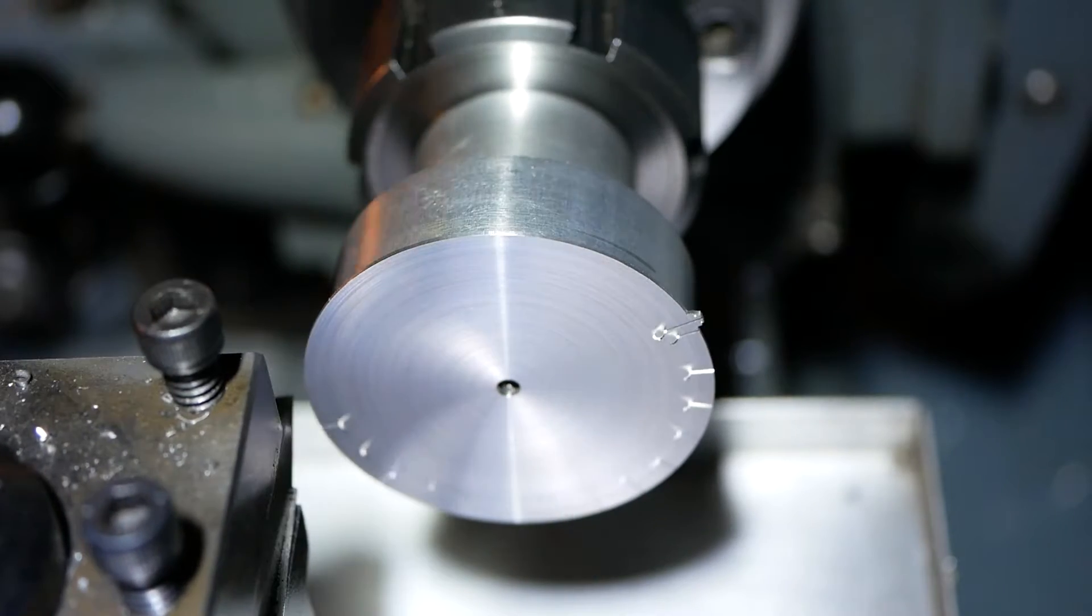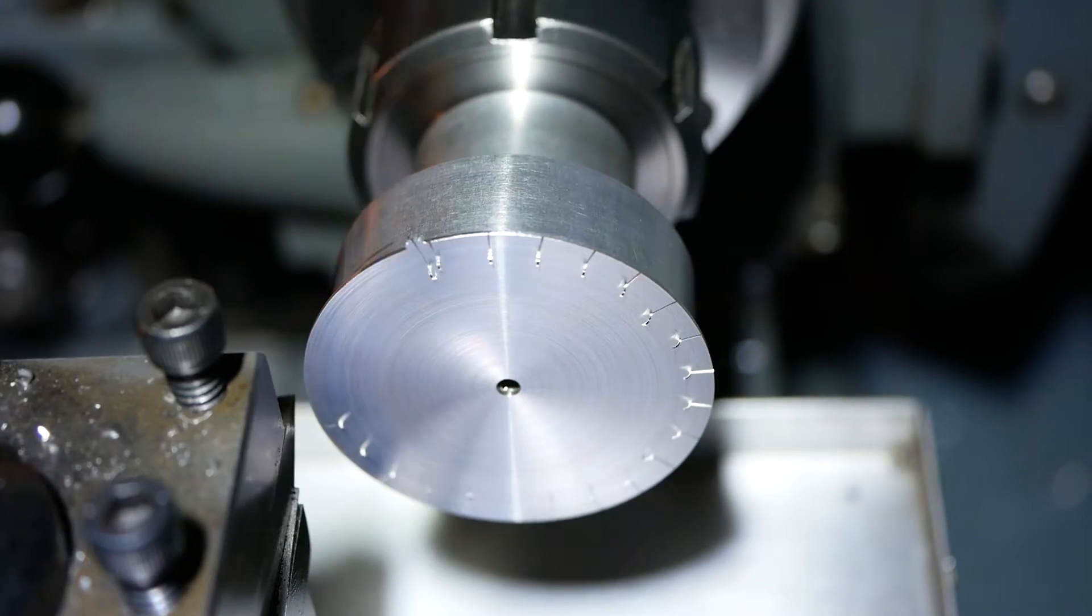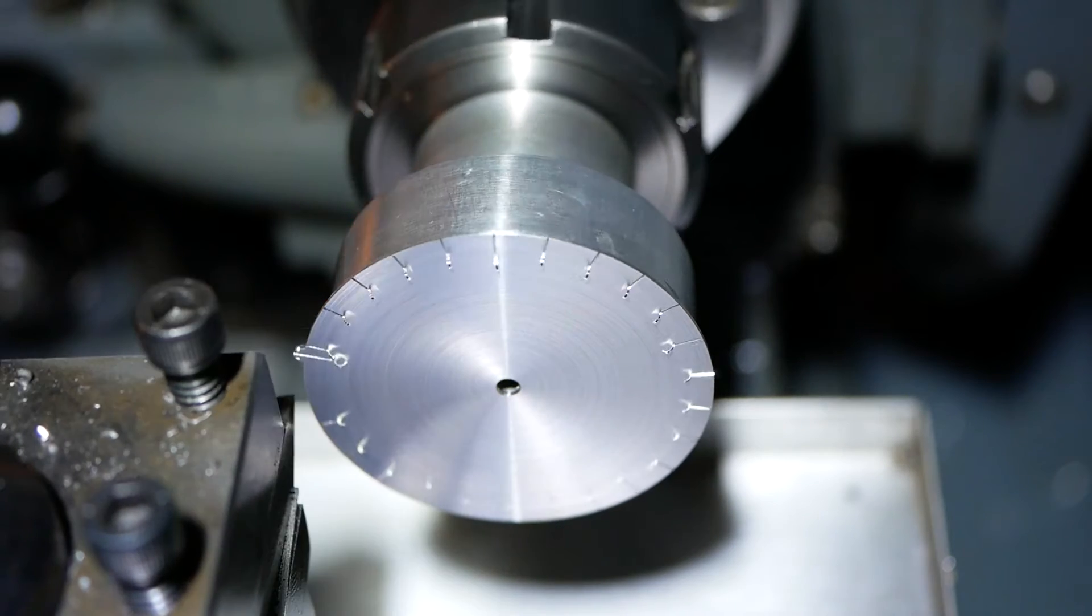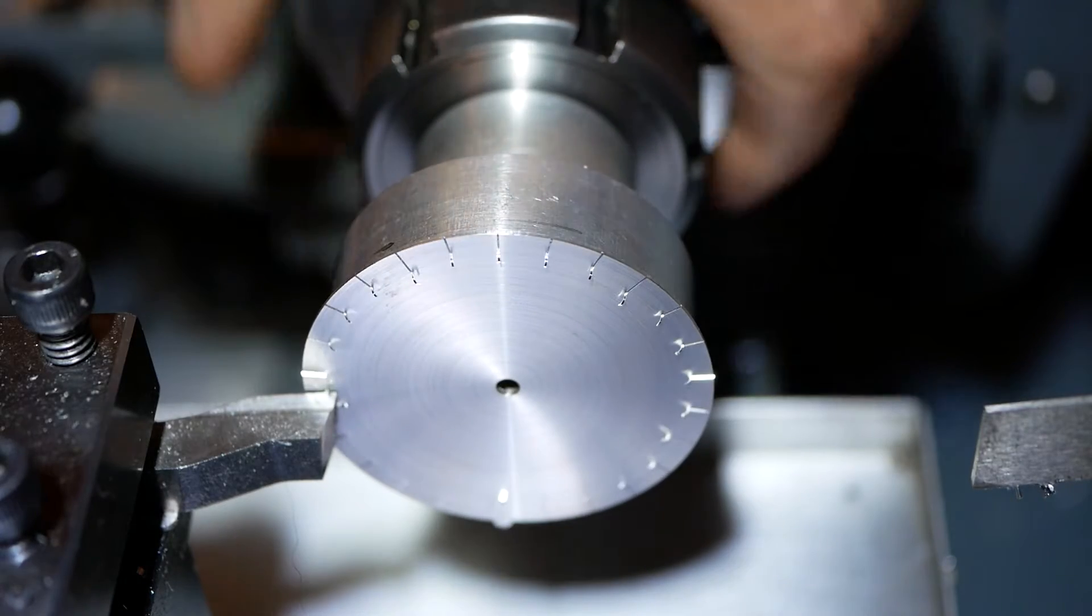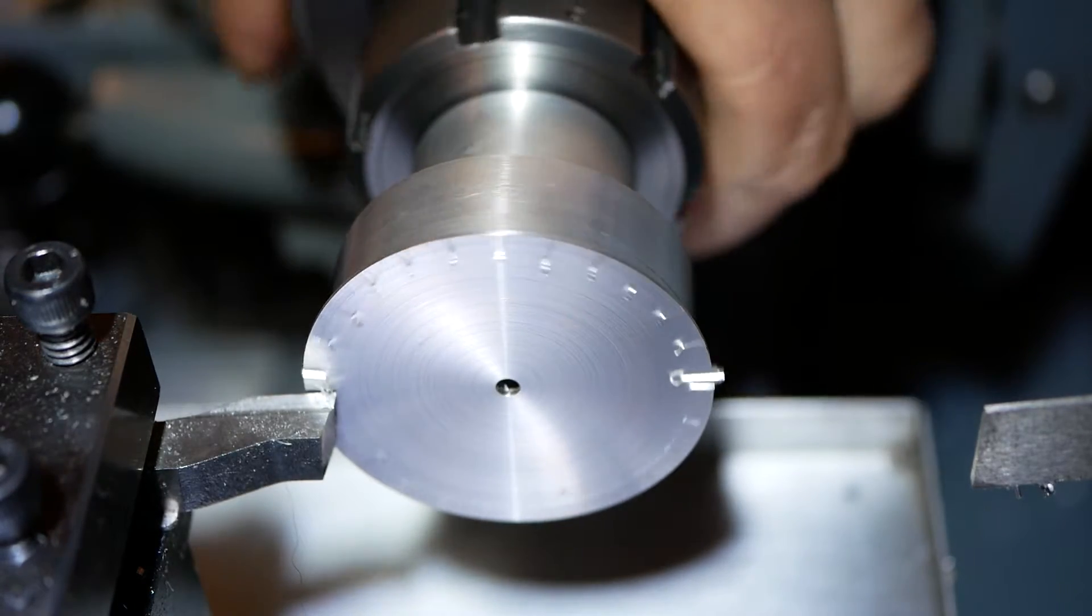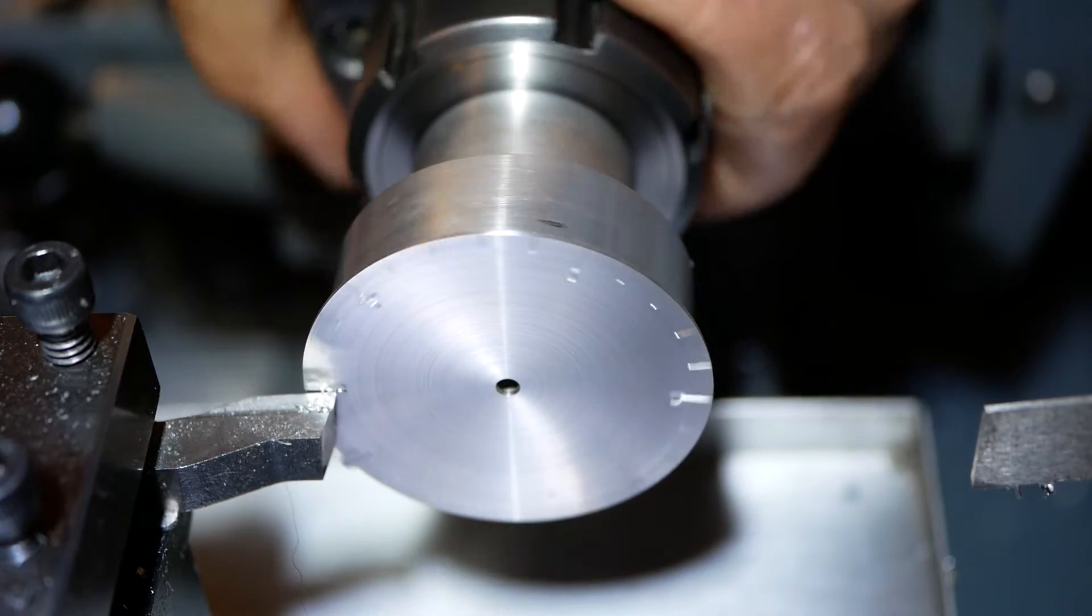To remove the burrs brought up from the engraving process just knock them off with the tool.